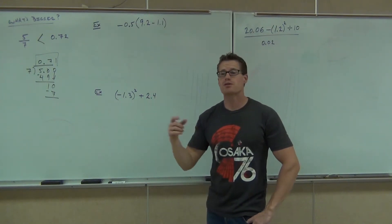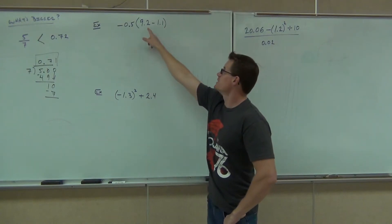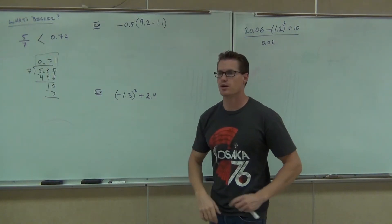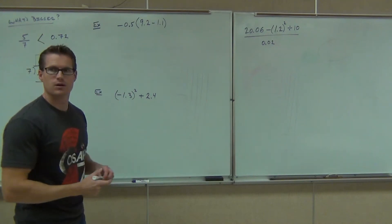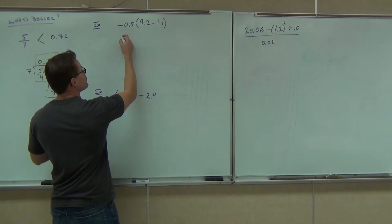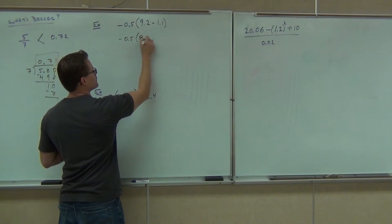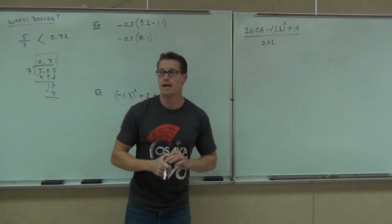So let's do parentheses. Do it off to the side if you'd like to. Somehow we need 9.2 minus 1.1. How much is 9.2 minus 1.1? 8.1. So we have negative 0.5 times 8.1. What do we do next?